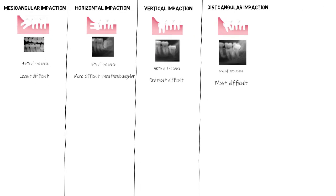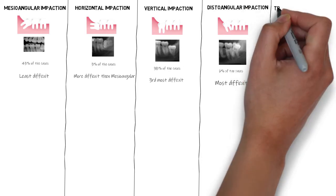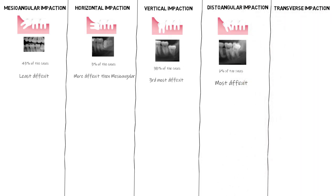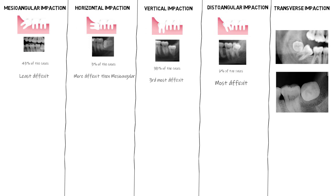Apart from these four angular impactions, there is another very rare type: the transverse impaction, in which the tooth is in the absolute horizontal position but placed in a buccolingual direction. The occlusal surface may be towards either the buccal or lingual side. This type of impaction may be difficult to see with a normal panoramic radiograph and may require a cone beam CT scan to visualize the position of the tooth.